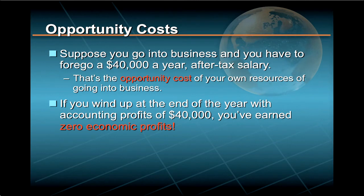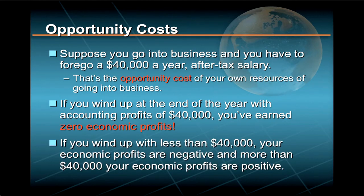Now if you wind up at the end of the year with accounting profits of $40,000, you have earned zero economic profits because your accounting profits just cover your opportunity costs. It likewise follows that if you wind up with less than $40,000, your economic profits are negative, and more than $40,000, your economic profits are positive.